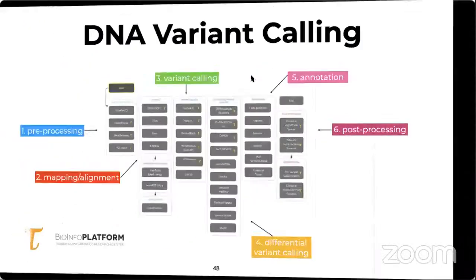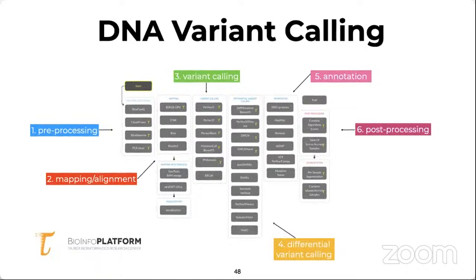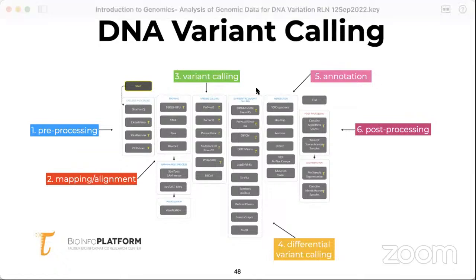Genomics data analysis is performed with FASTQ files, which are the output of next-generation sequencing machines. There are several important steps: pre-processing, mapping, variant calling, annotation of variants, and post-processing to understand their impact by relating them to the phenotypical and biological state of the sample.